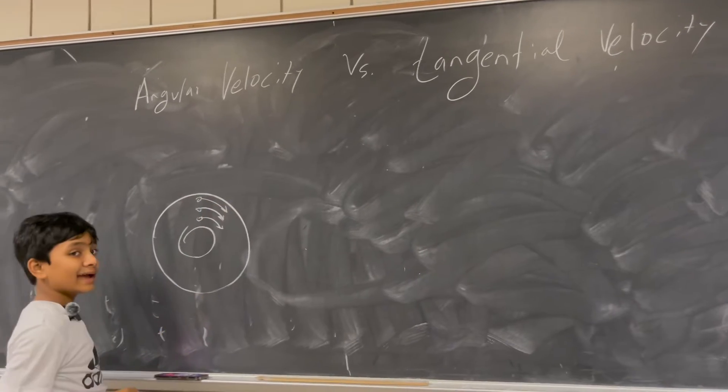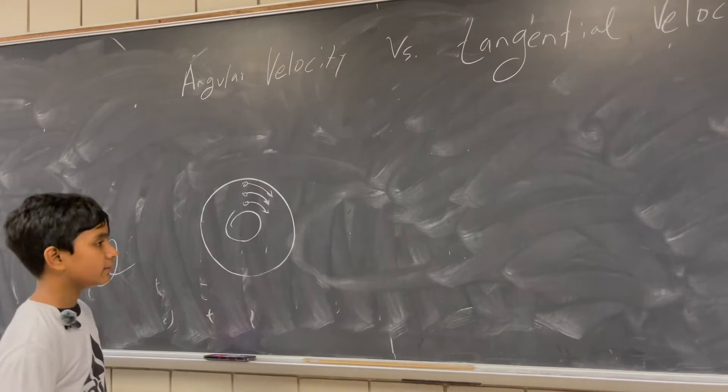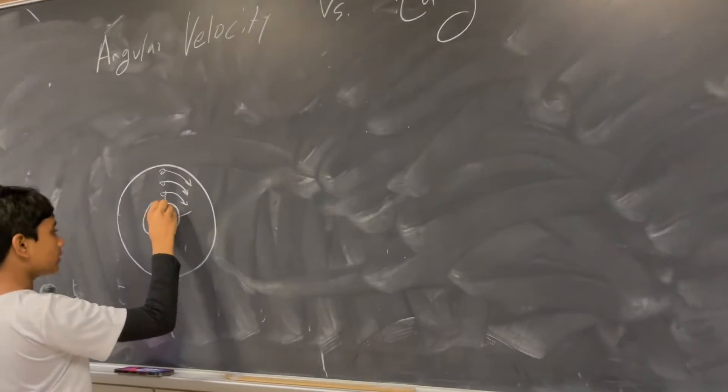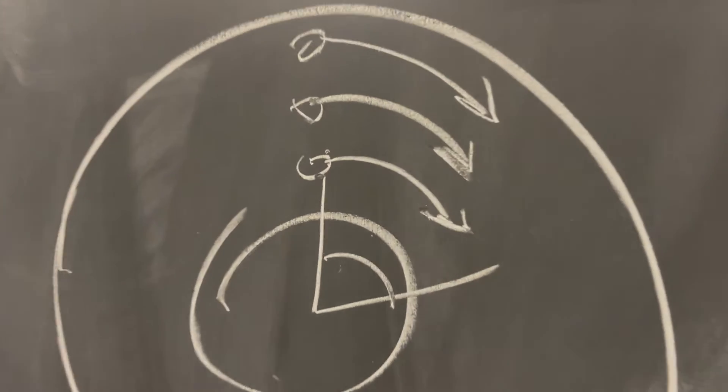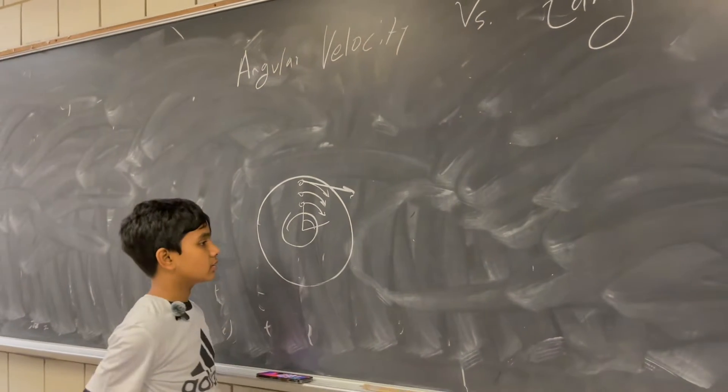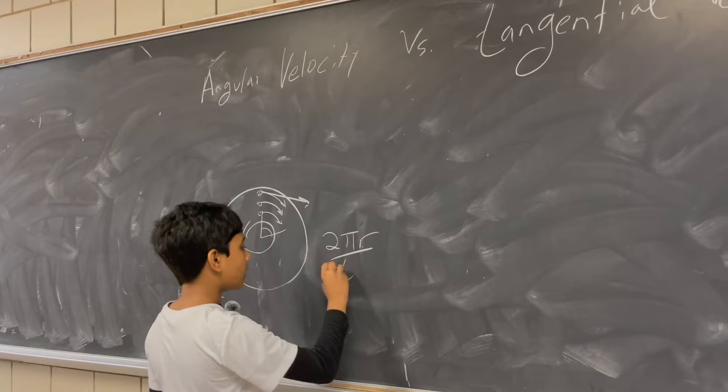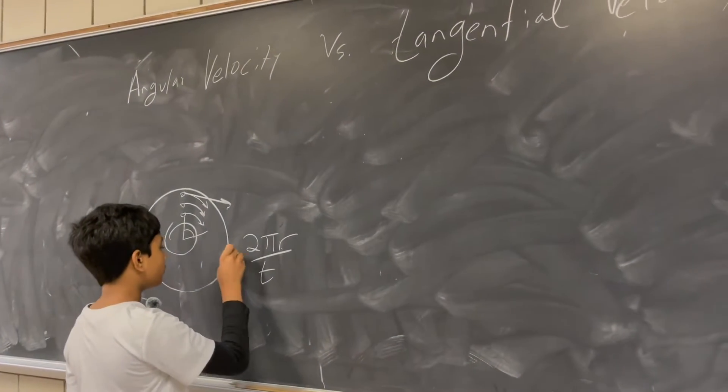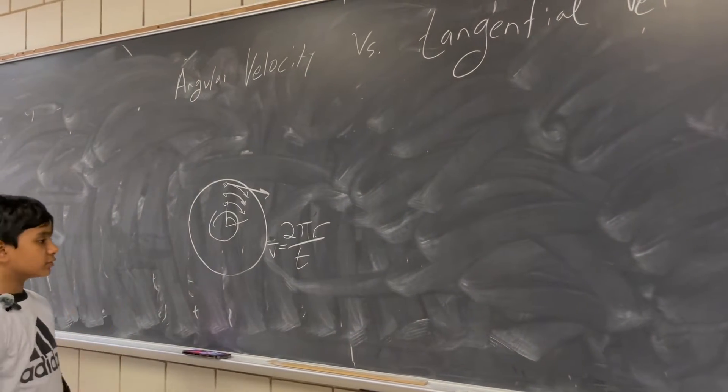You can kind of think of angular velocity as the percent of the total orbit you've completed, because it's basically the rate of your change in angle over time. And tangential velocity is kind of like regular velocity in that it's just your rate of change, the distance you travel over the time, and this is your average tangential velocity over one full revolution.